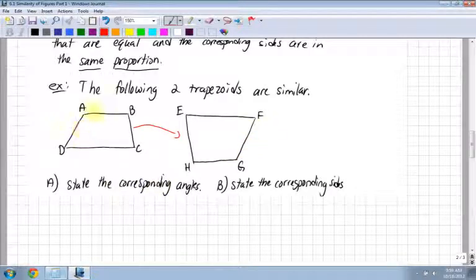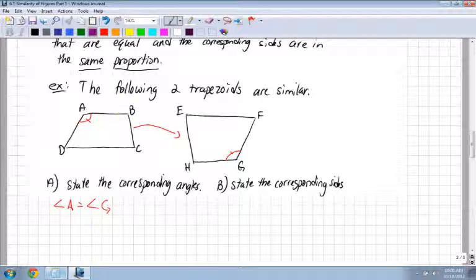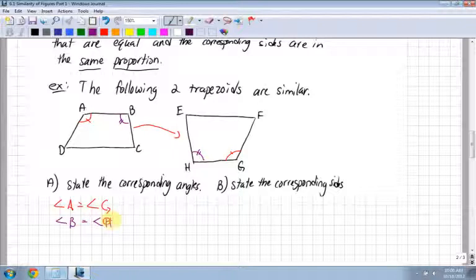Those corresponding angles: I have angle A up here, which is going to be like angle G. Those two angles are the same. Angle A equals angle G. Let's look at angle B. What's angle B equal to? Angle H. So angle B equals angle H. You have to be really careful because sometimes they flip these objects and you have to flip them in your head.